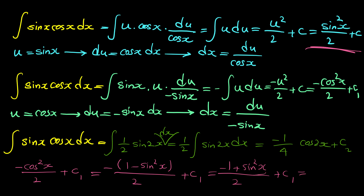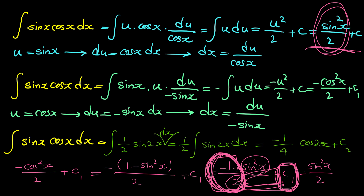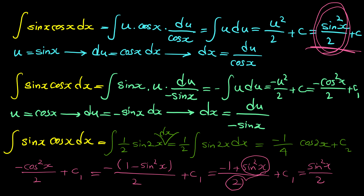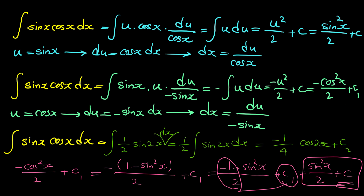Distributing the negative gives negative 1 plus sine squared x, all over 2 plus C1. This simplifies to sine squared x over 2 minus one half plus C1. Since negative one half plus C1 is just a constant, we can rename it C, and we see this expression is exactly sine squared x over 2 plus C. The two answers are equal.